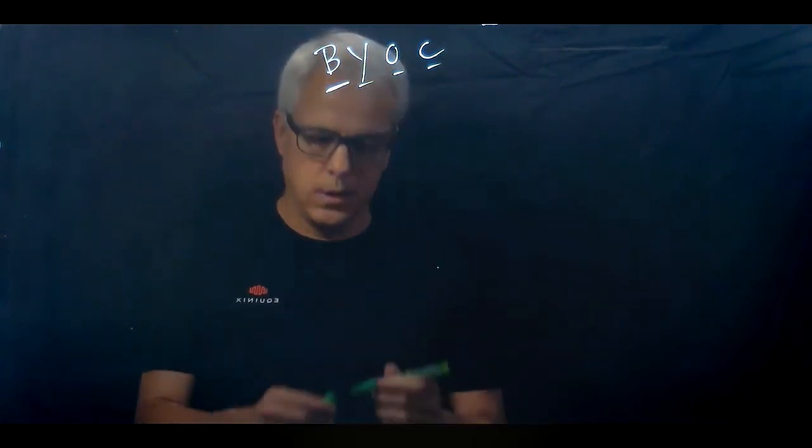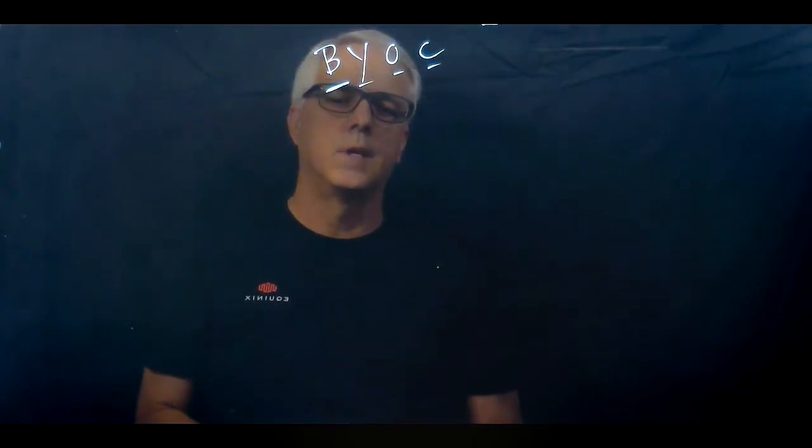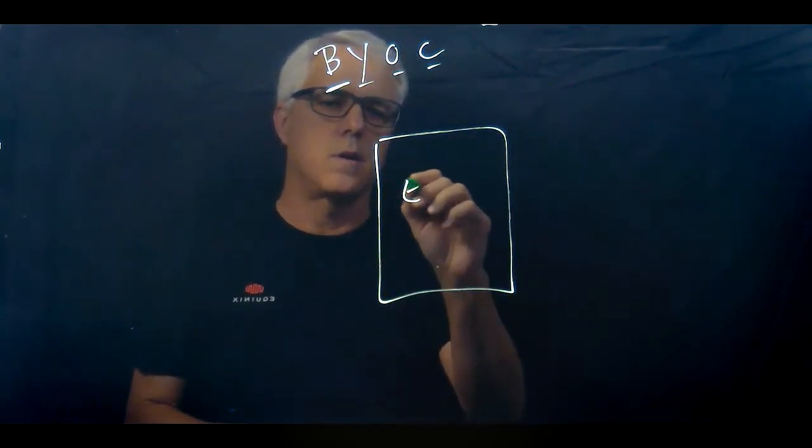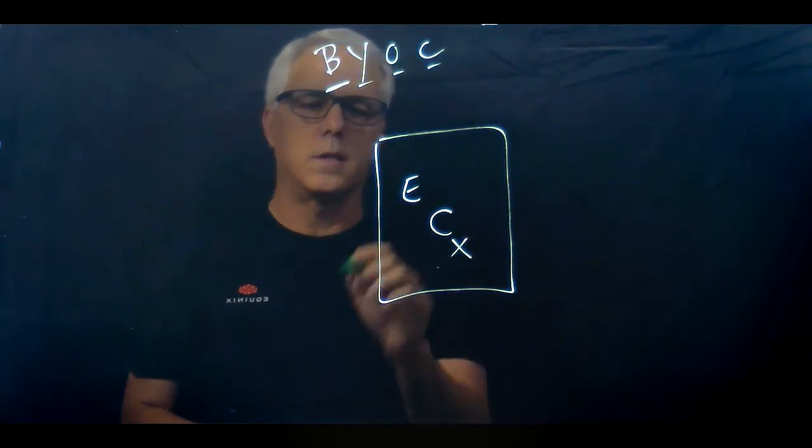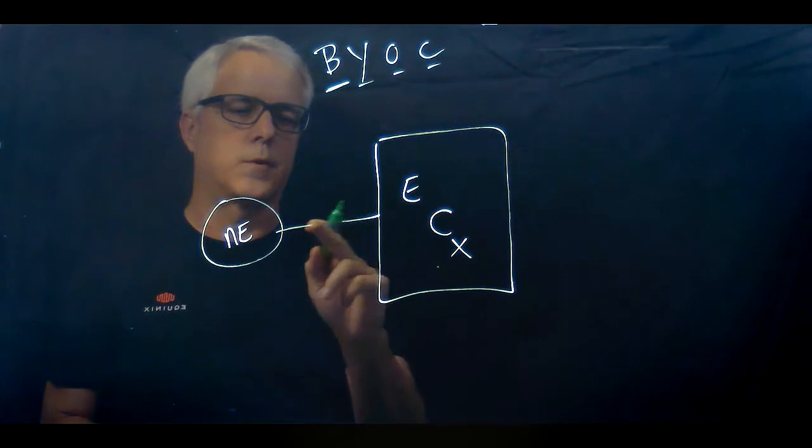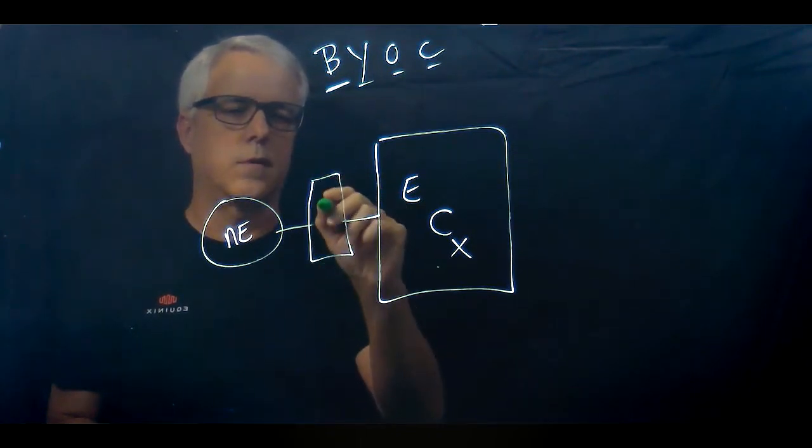We're going to talk about the B in BYOC, bringing your own connection. The way it works is the ECX switch is here. The Cloud Exchange switch, Network Edge device is hanging on this side and the NFV infrastructure is sitting right here.